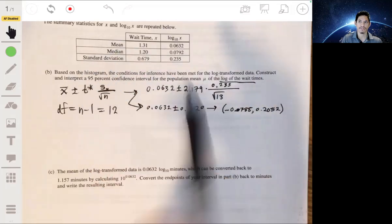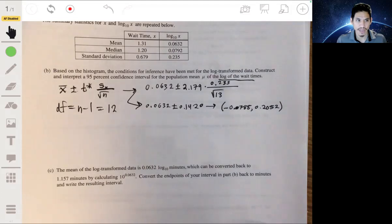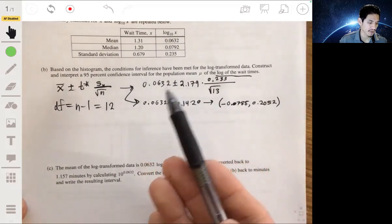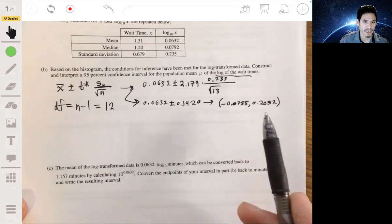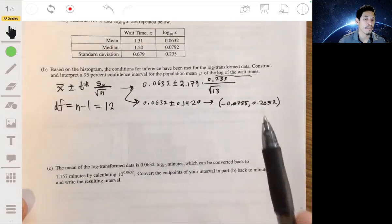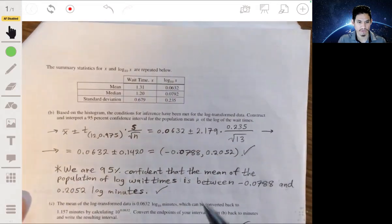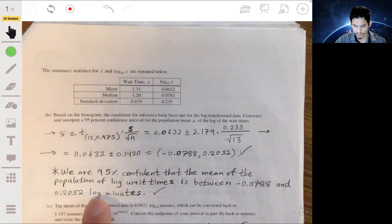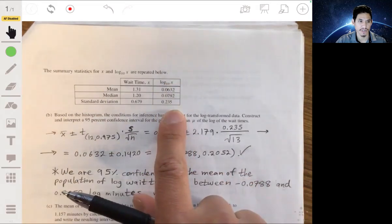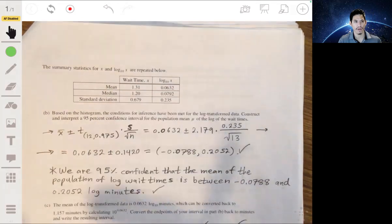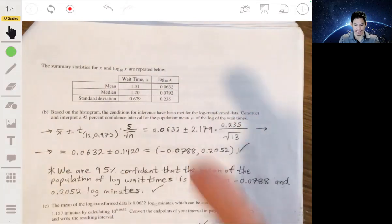To interpret it, just use your general sentence frame for any confidence interval. We'll say we are 95% confident that the mean of the population of log wait times is between negative 0.0788 and 0.2052 log minutes. Make sure you mention the unit. If you leave it without the units, they may dock you for some points. These are in a different unit. These aren't straight up minutes, these are transformed data. It's basically 10 to that value. These are exponents.